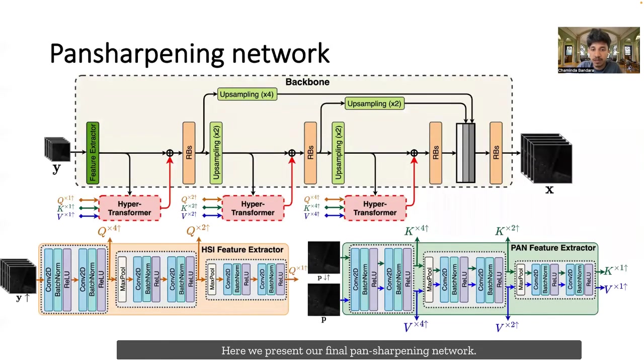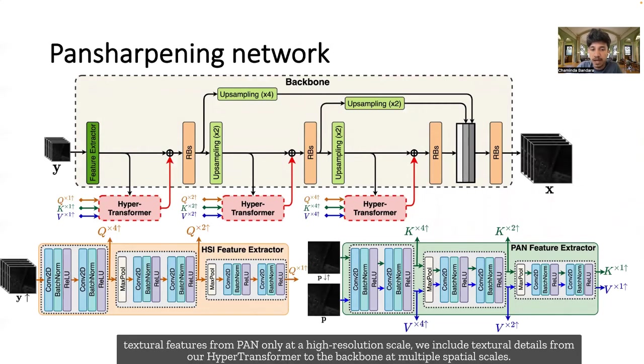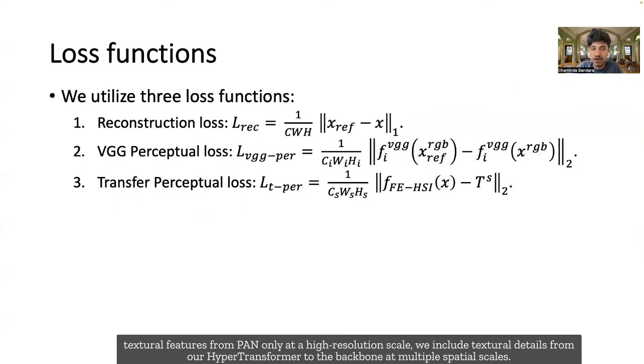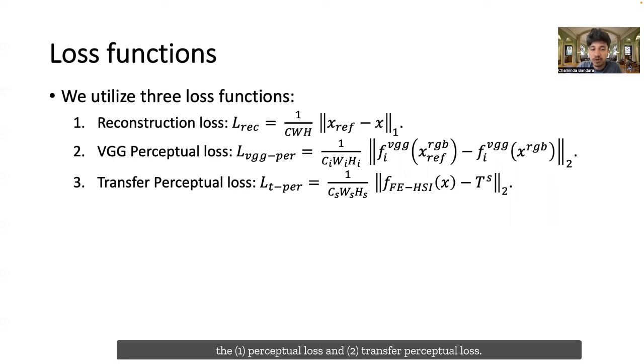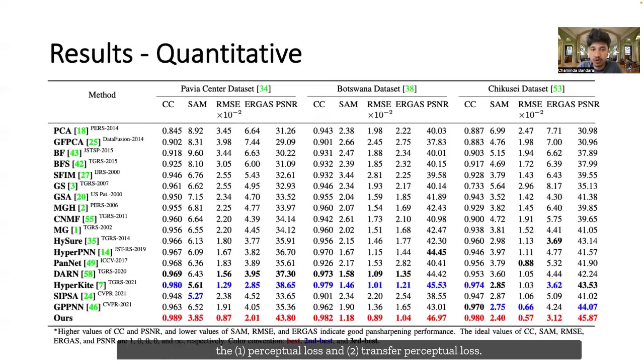Here, we present our final pan-sharpening network. Unlike the conventional pan-sharpening methods that fuse textural features from pan only at high-resolution scale, we inject textural details from our hyper-transformer to the backbone at multiple spatial scales. Furthermore, to obtain visually appealing pan-sharpened HSIs, we also introduce two loss terms to the hyperspectral pan-sharpening, namely the perceptual loss and transfer perceptual loss.